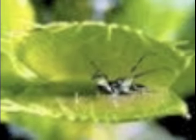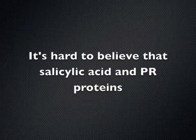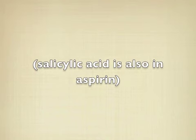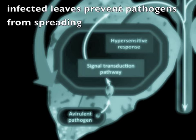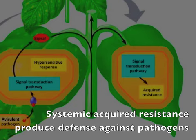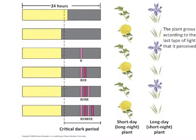It's hard to believe that salicylic acid and PR proteins can defend the plant from pathogens entering with the help of the R gene. The hypersensitive response kills infected cells to prevent pathogens from spreading. Systemic acquired resistance produces a broad defense against pathogens in plants.